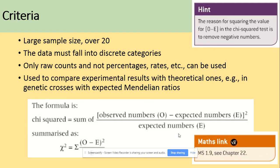Only raw counts and not percentages, so we're not using rates. Percentages, just raw counts. And it's used to compare, of course, experimental results with the one that we expect. So we've learned about the genetic crosses, we've learned about the ratios. And we can use chi-squared test to see if the real results are following their expectations.